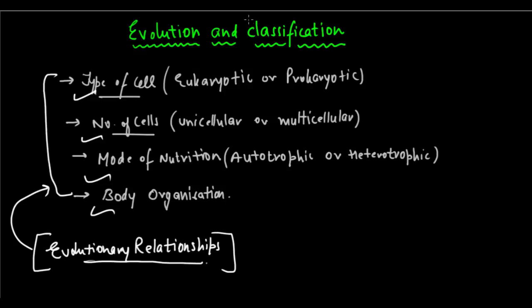Hence, we can conclude that classification and evolution can be interconnected. If we can classify organisms, it can help us study evolutionary relationships as well.